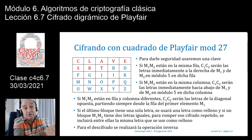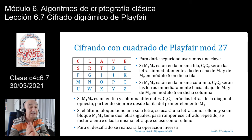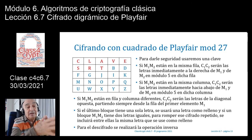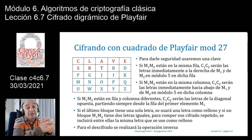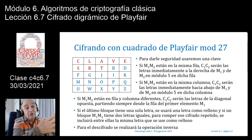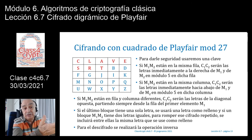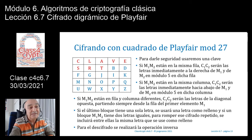¿Cómo desciframos? Lógicamente la operación inversa. Si están en la misma fila y al cifrar leo la letra a la derecha, entonces al descifrar leo la letra a la izquierda. Si están en la misma columna y al cifrar leo la letra inmediatamente debajo, al descifrar tengo que leer la letra inmediatamente arriba, también en módulo 5. Y lo mismo si están en filas y columnas distintas: veo la diagonal opuesta, pero ahora partiendo del primer elemento C1 del criptograma, no de M1 del texto en claro.